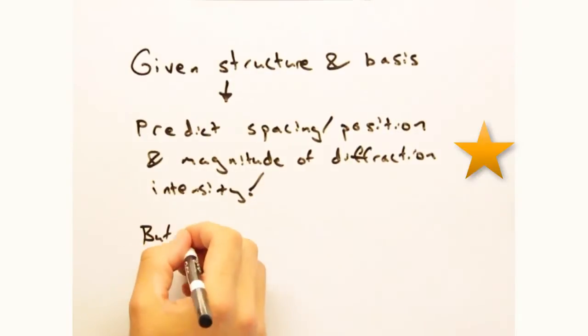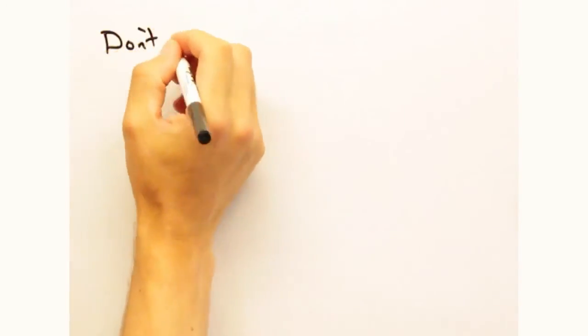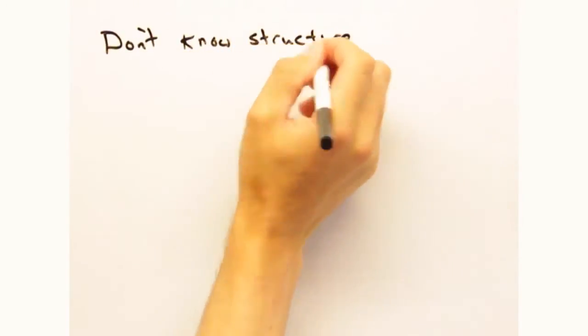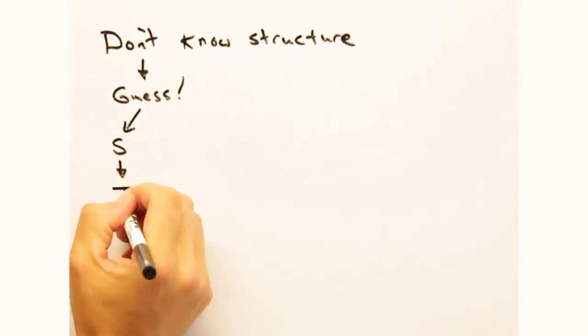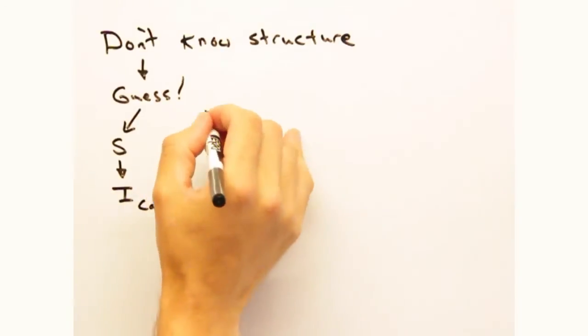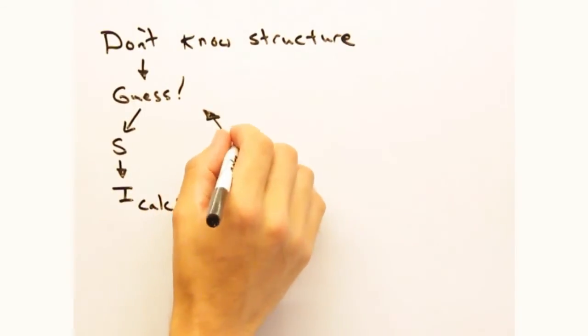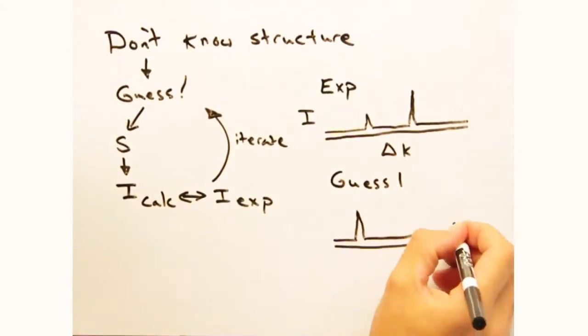Hold on. If I know where my atoms are in the first place, why am I bothering with a diffractometer? All right, I see you're paying attention. In practice, you don't know where your atoms are. Instead, you take a guess at what the structure is, then use the structure factor to calculate the intensity pattern, compare that to experimental data, and then tweak your guesses until they finally match. Okay, that makes sense.